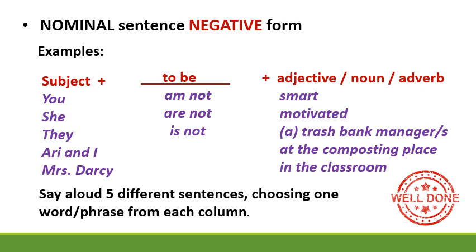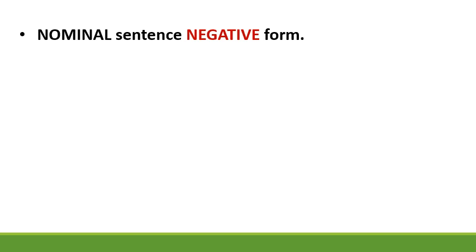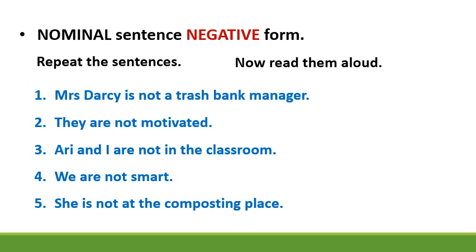Well done. Nominal sentence negative form — repeat the sentences that you hear. Listen carefully. One: Mrs. Darcy is not a trash bank manager. Two: they are not motivated. Three: Ari and I are not in the classroom. Four: we are not smart. Five: she is not at the composting place. Now read them aloud. Did you get them right?